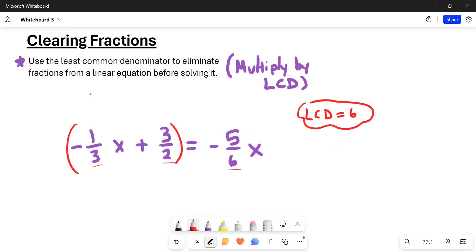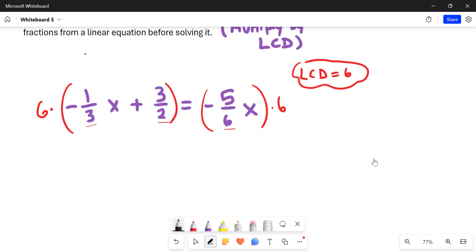The technique is to take both sides of the equation and multiply by this LCD. We're going to multiply the left side of the equation by six and the right side by six. This will clear the fractions. When we distribute, we're going to distribute six times negative one-third x. If you can't do that in your head, you might think off to the side.